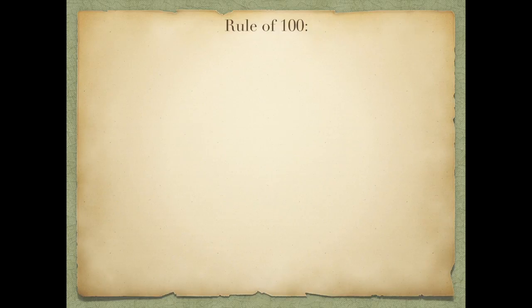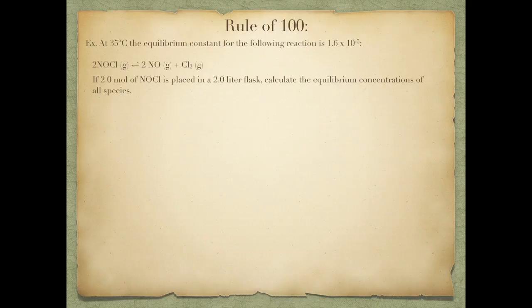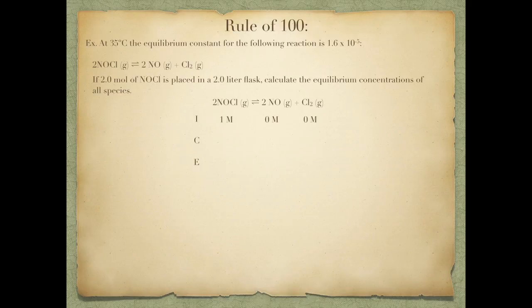When calculating concentrations at equilibrium, the math can get pretty tricky and force you to use the quadratic formula. Instead, there's a shortcut called the Rule of 100. I'm given an equilibrium with NOCL, starting with two moles in a two-liter flask. My initial concentration of NOCL is 1 molar; the other products are zero. NOCL will decrease by 2x, NO will increase by 2x, and Cl₂ will increase by x. My equilibrium concentrations are 1 minus 2x, 2x, and x.